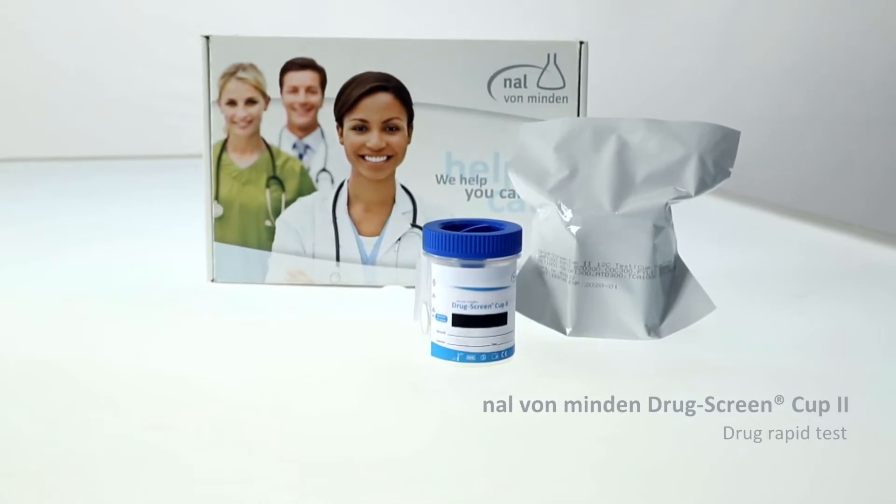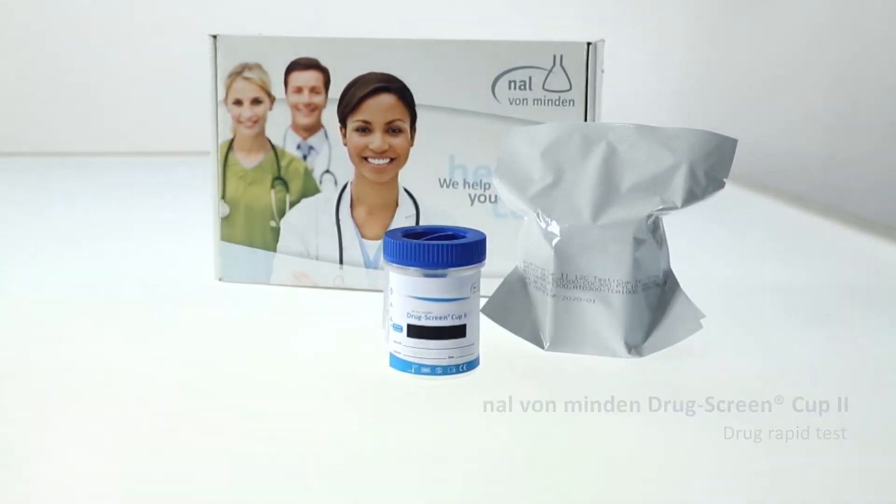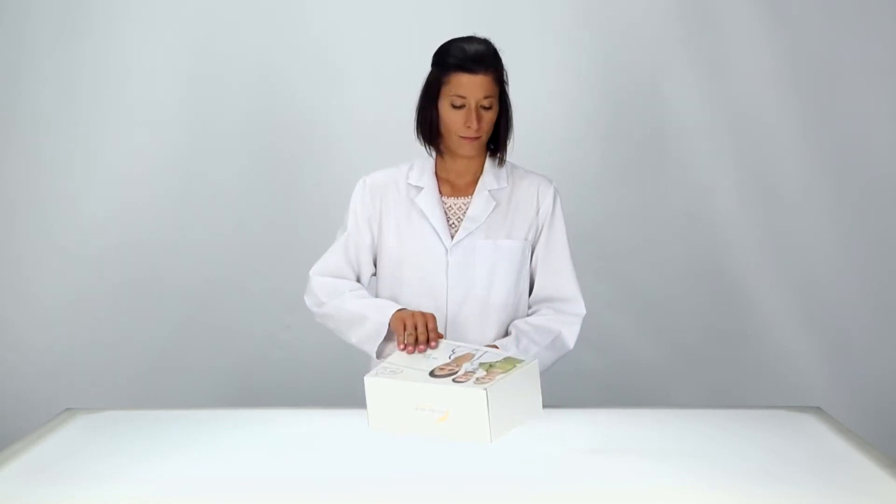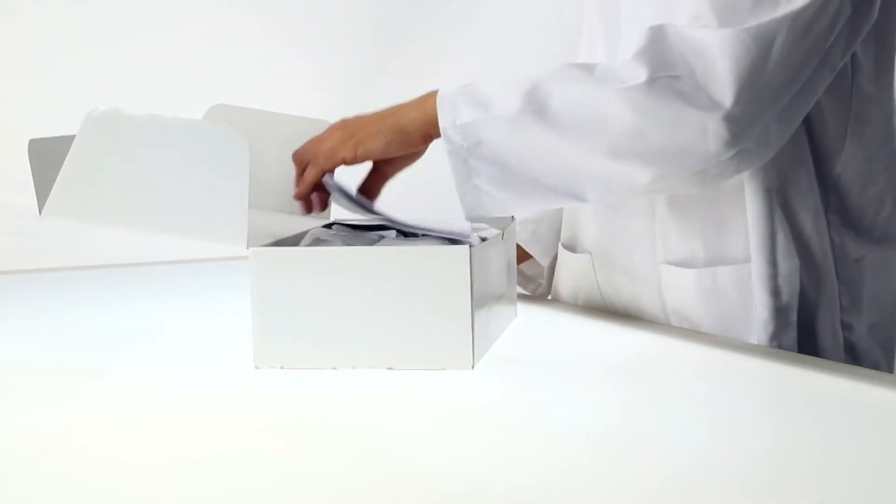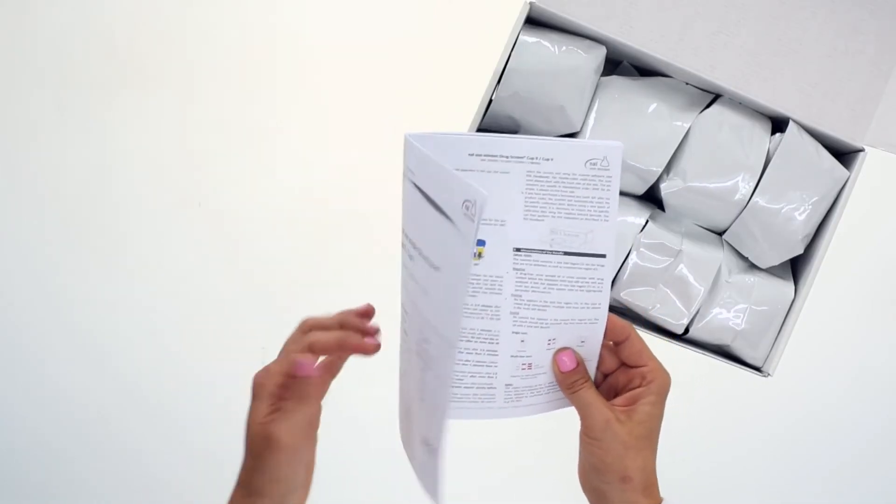The Nahl von Minden drug screen cup tests detect various drugs and drug metabolites in human urine. All Nahl von Minden drug screen cup tests are based on the same test principle. Always start by reading through the instructions carefully.